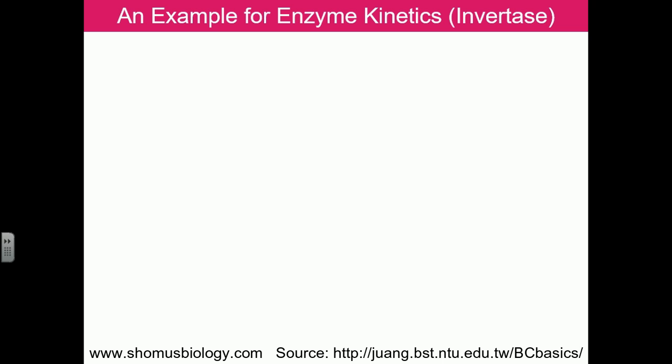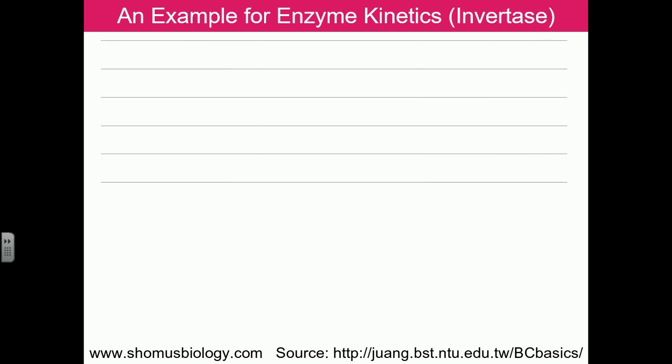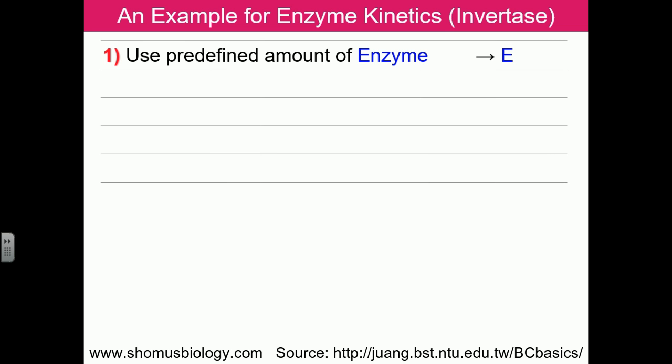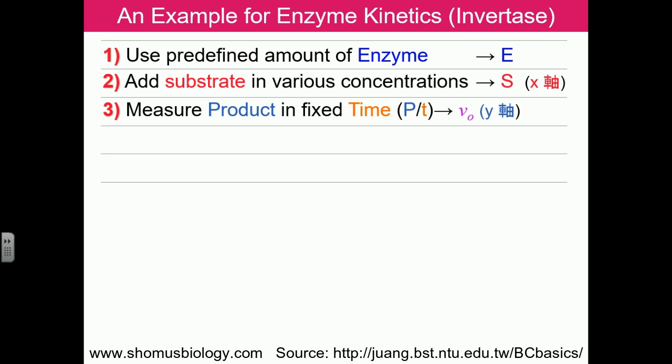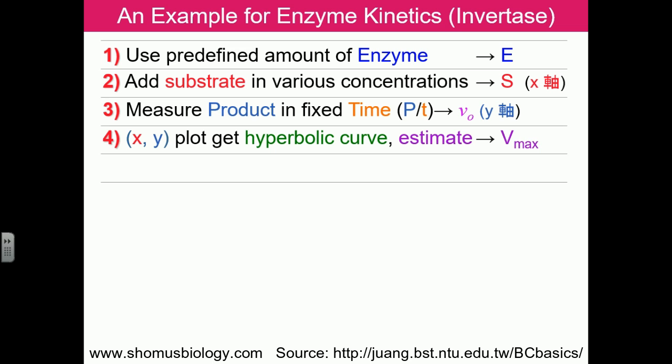Looking at the invertase example and plotting graphs: we use a predefined amount of enzyme (capital E, free enzyme), add substrate in various concentrations (capital S), and measure the product in fixed time — P divided by t — which gives us the initial velocity v₀. We then plot x and y to get a hyperbolic curve.